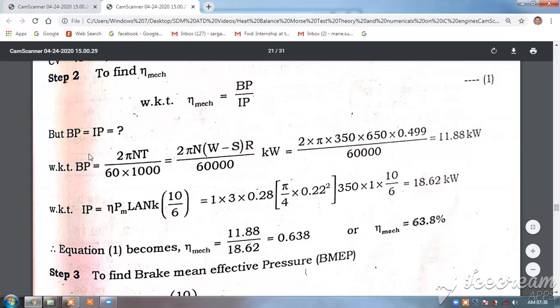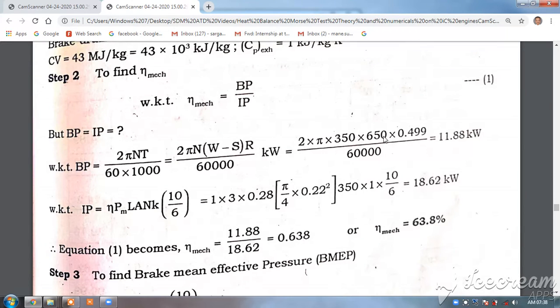BP is equal to 2πNT/60000. So 2 into π into N, where W is the effective load into R (this is the torque), divided by 60000. So 2 × π × 350 × 650 × 0.499 / 60000, which gives 11.88 kW.